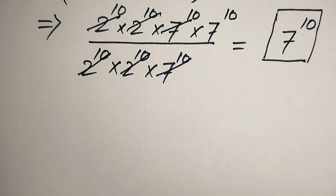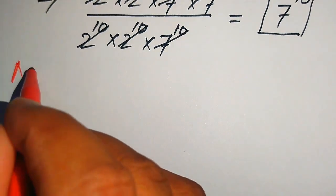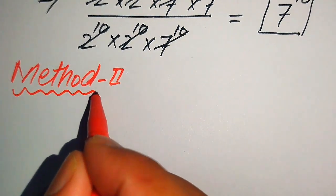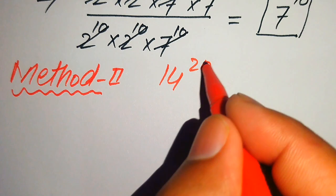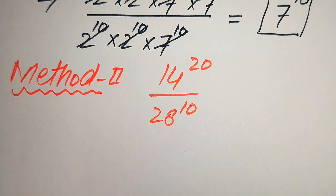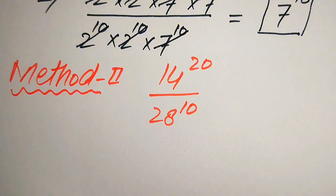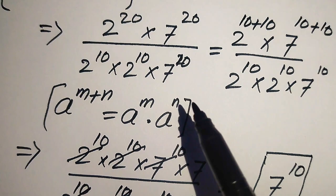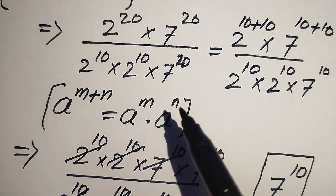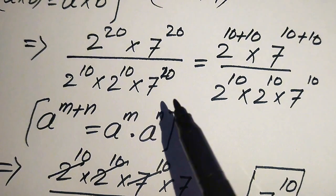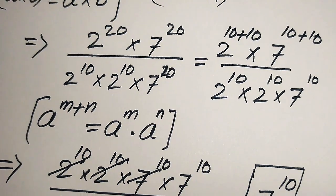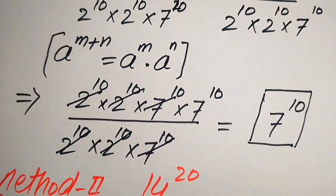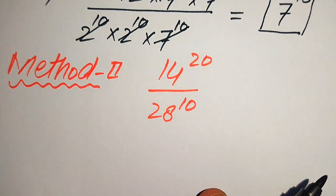We now move to the second method and solve the same problem: 14^20 divided by 28^10. I'm showing all steps for average or mediocre students, since some genius students can do these calculations mentally. For those who cannot, I want to make sure the explanation is clear.